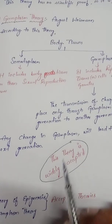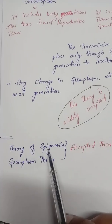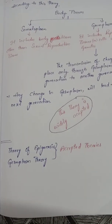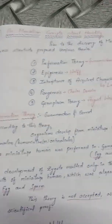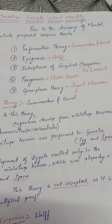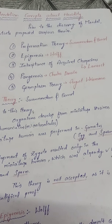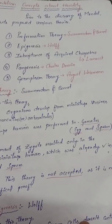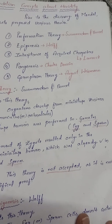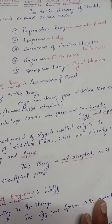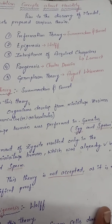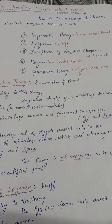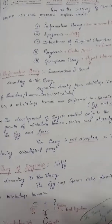To summarize: the theory of epigenesis and germplasm theory are the two widely accepted or universally accepted theories. Preformation theory, theory of acquired characters, and theory of pangenesis — given by Swammerdam and Bennett, Lamarck, and Charles Darwin respectively — are rejected for not having scientific proof. The theory of epigenesis by Wolf and germplasm theory by August Weismann are accepted because they have scientific explanation and proof. Thank you.